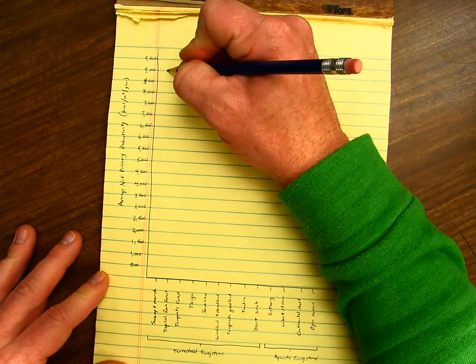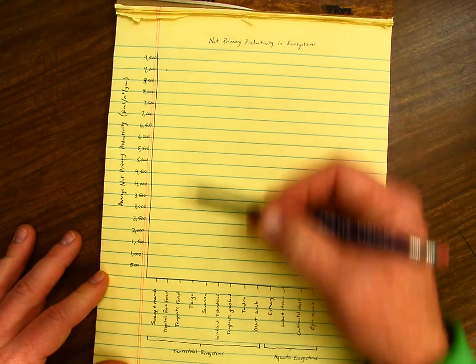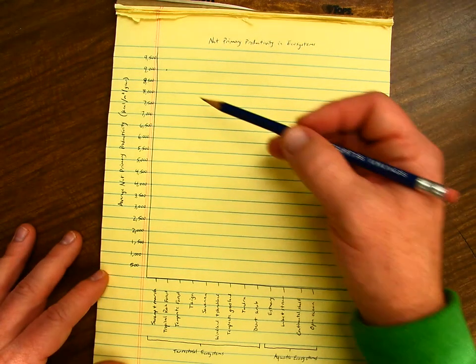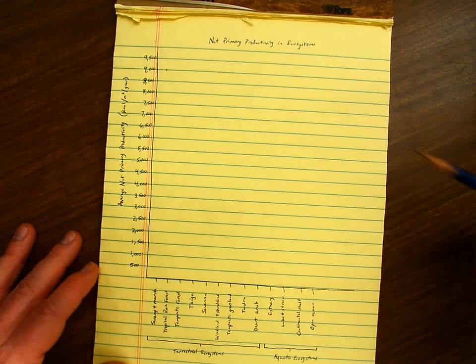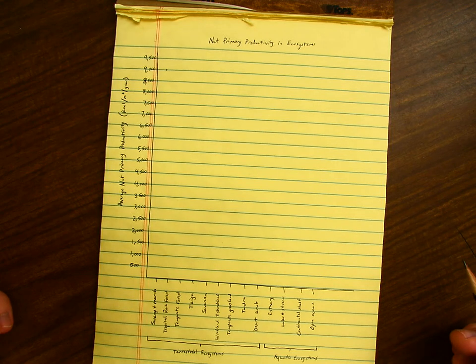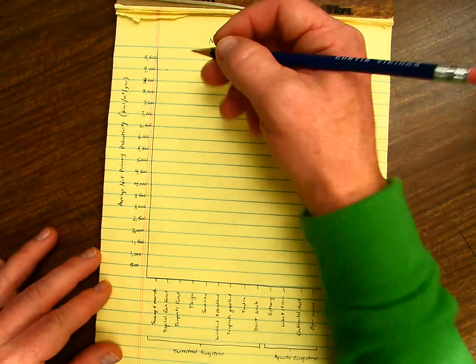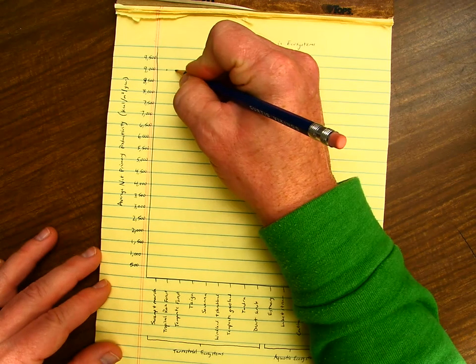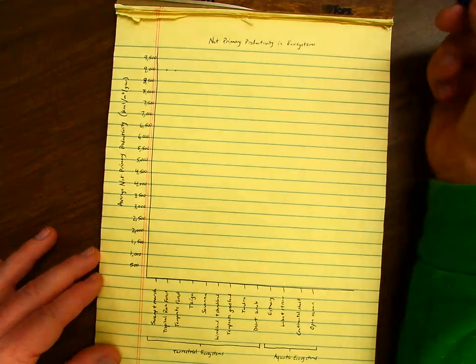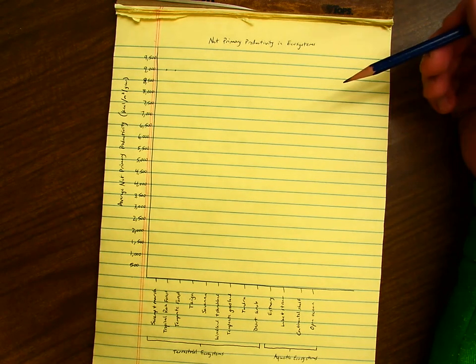I'm not going to build the bars just yet; I'm just going to mark off the top spots where they all are, and then I'll build the bars later. Tropical rainforest is the next one; it's also at nine thousand.